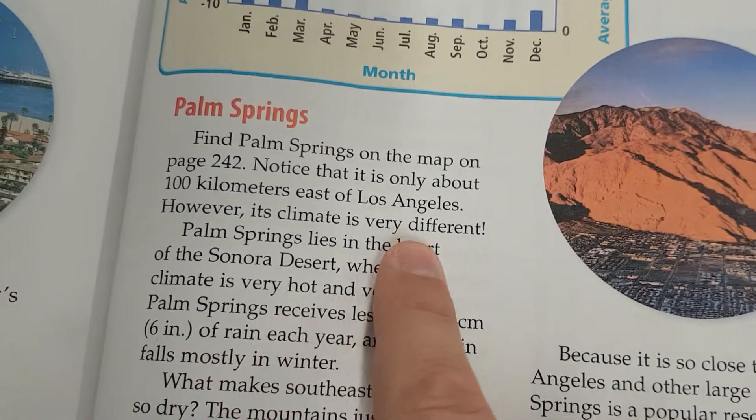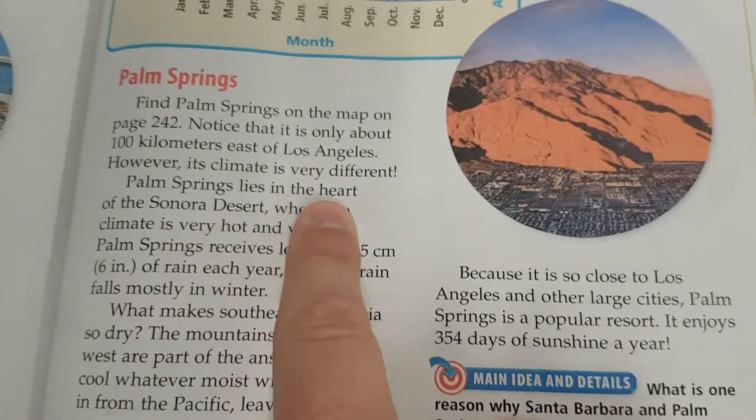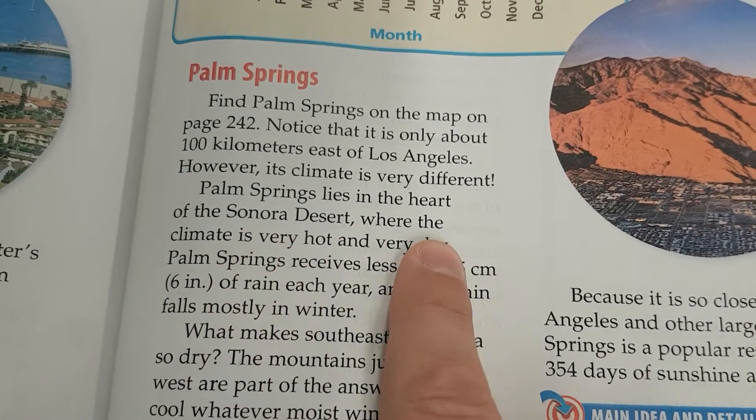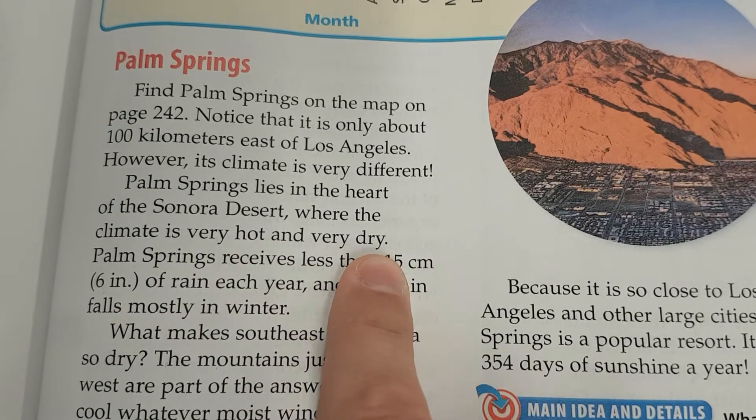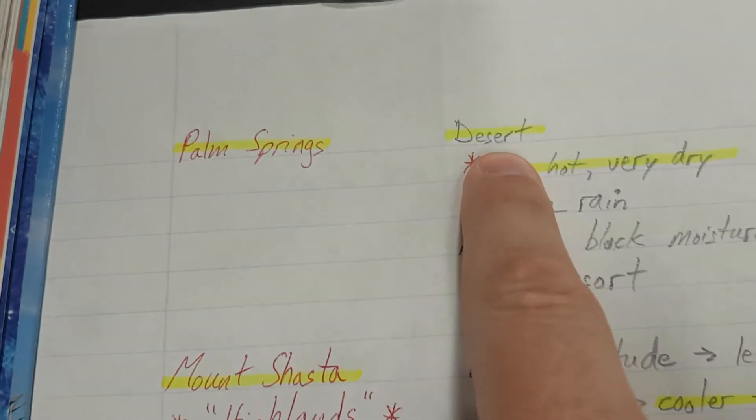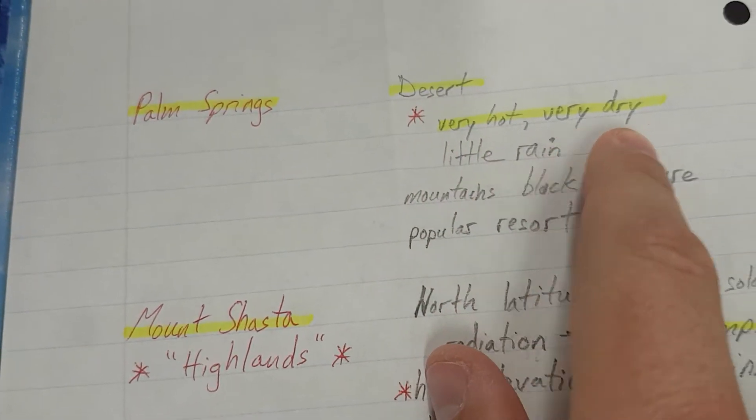However, its climate is very different. Palm Springs lies in the heart of the Sonora Desert, where the climate is very hot and very dry. So desert, very hot, very dry.